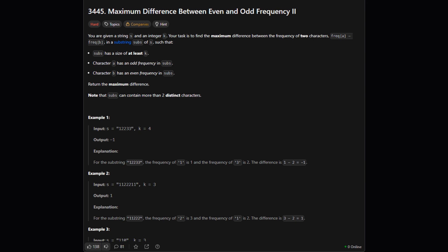Okay, so here's the task. We're given a string of digits and a number, which we'll call K. We need to find the absolute best score we can get by taking the frequency of one character, let's call it A, and subtracting the frequency of another character, B. But, there are three important rules. First, this calculation has to happen inside a substring that has a length of at least K. Second, character A must show up an odd number of times in that substring. And third, character B must show up an even number of times. Our job is to find the maximum possible score across all substrings and all possible pairs of A and B. If we can't find any that fit the rules, we return negative 1.